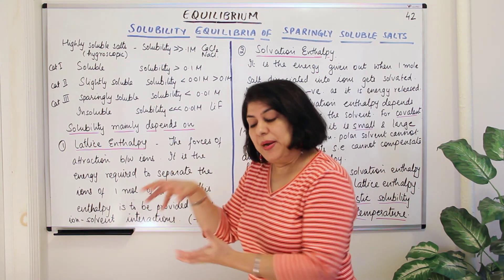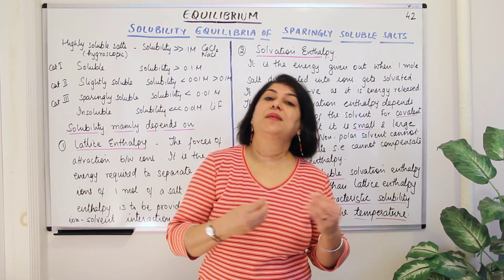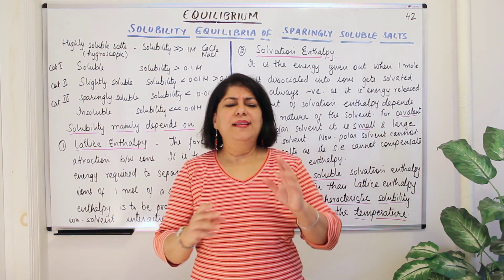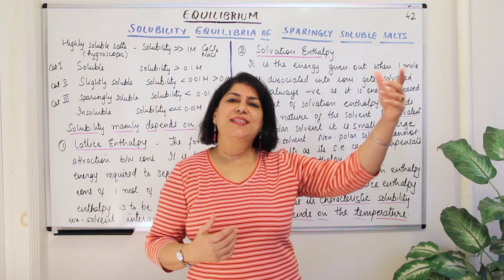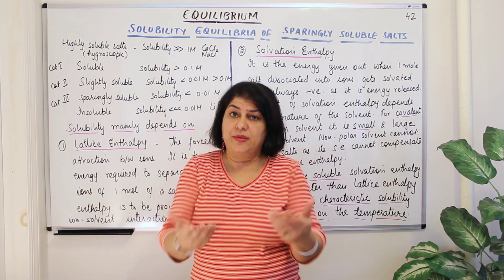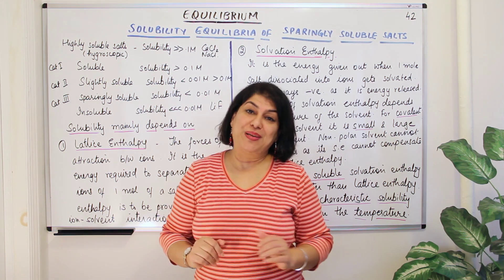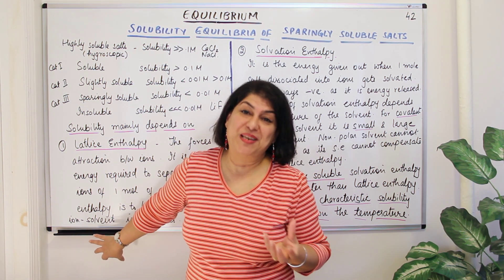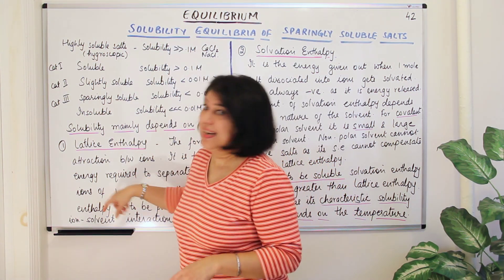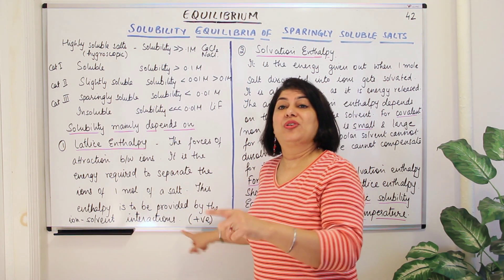So in the first step — lattice enthalpy — you have to provide energy to separate out the ions. But in the second step, the ions get solvated, or if the solvent is water, they get hydrated. Any process that takes place usually takes place for stability. So if you are putting in energy, there must be something which releases more energy than this, so that on the whole the process leads to stability.